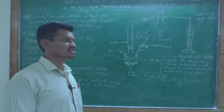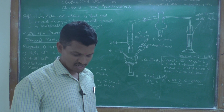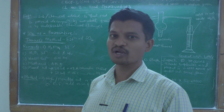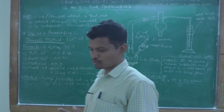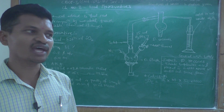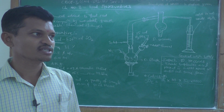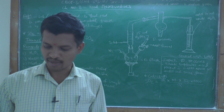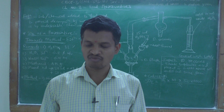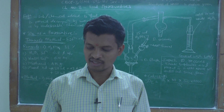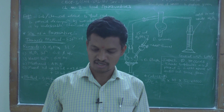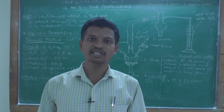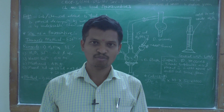In our syllabus, different food preservatives are given, and we are going to study the estimation of these food preservatives by specific methods. The first food preservative is sulfur dioxide (SO₂), which is used as a food preservative in many different types of food. It may be used in the form of a gas, as sulfurous acid in solution, or as sulfites of sodium, potassium, and calcium.